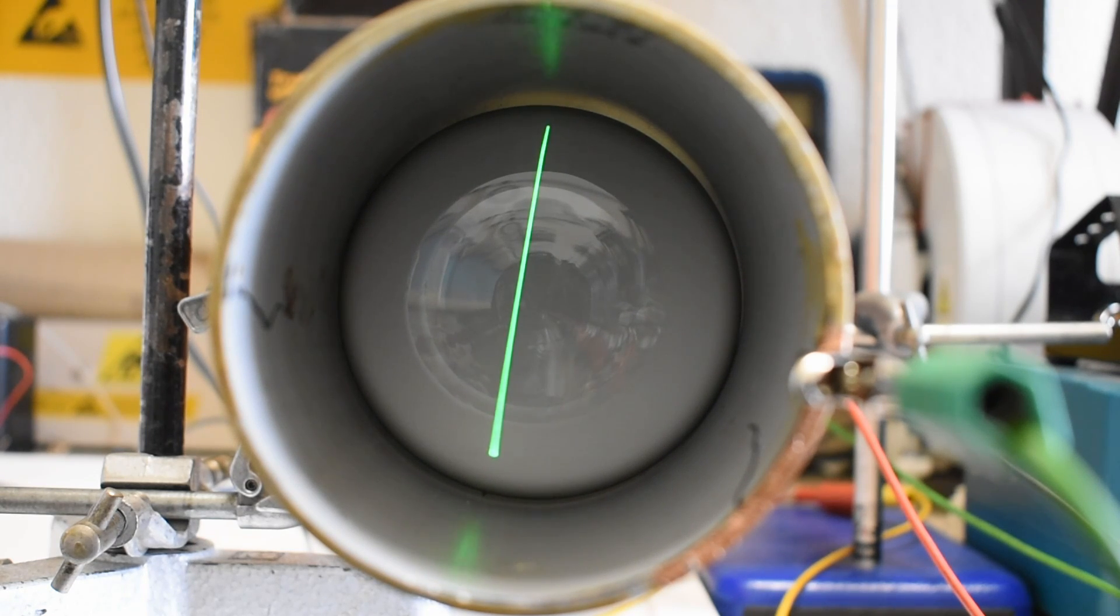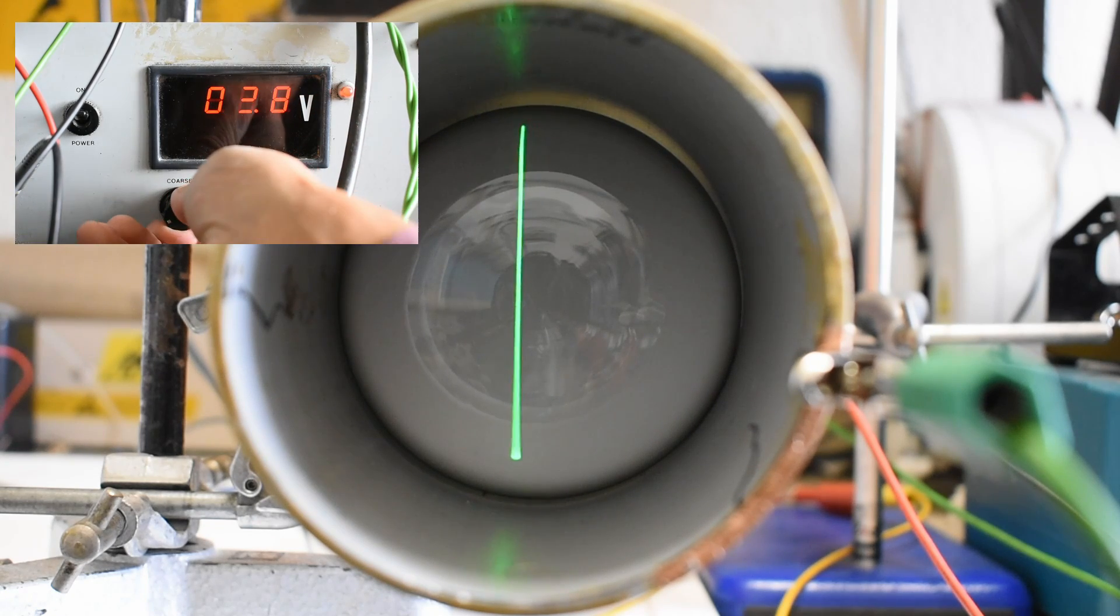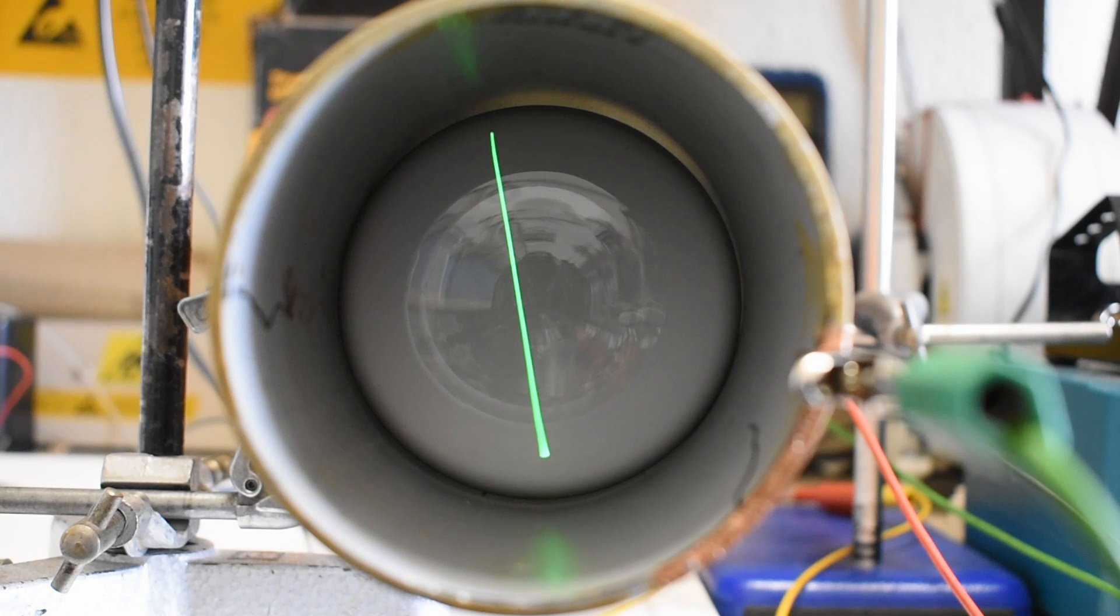I can now apply a voltage to the coil. Initially I use a variable supply for that. So I connect that. Now we have a DC voltage across the coil and as I increase that voltage we're now causing the beam to twist round.